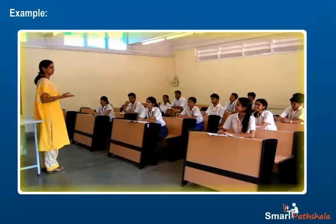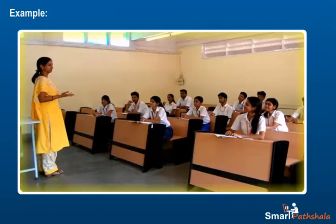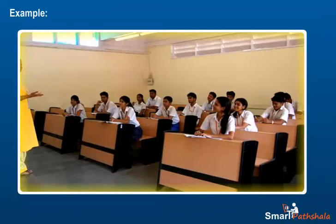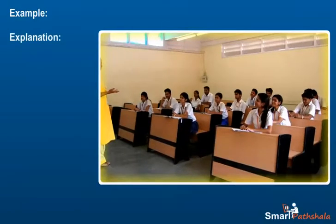Example: There are 14 girls and 20 boys in class 6A. Find the ratio of the number of girls to the number of boys. Explanation: Required ratio is equal to number of girls upon the number of boys which is equal to 14 upon 20 or 7 is to 10.